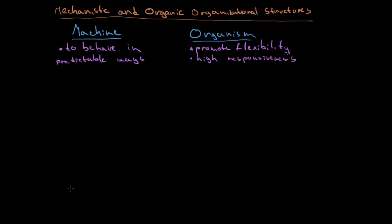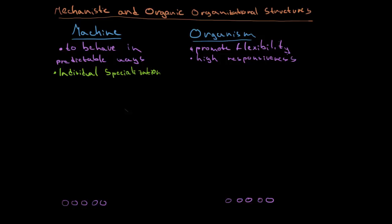I will draw some small pictures of these two companies. We have some tasks that are necessary to be done — here we have five tasks on each side. The first difference is that in the mechanistic structure we have individual specialization. We have five employees, and every one is individually specialized for one task.